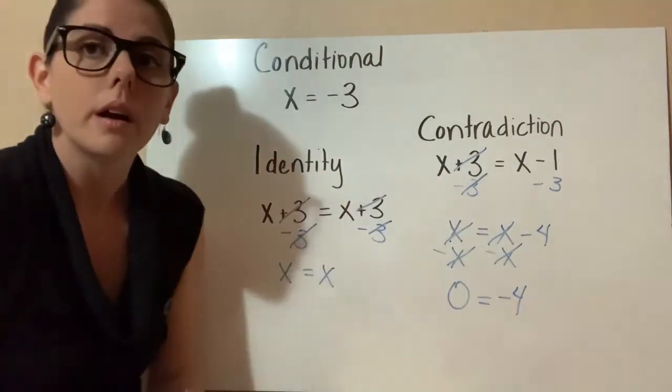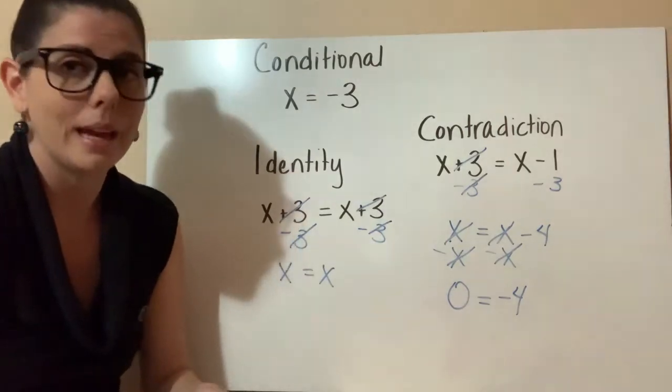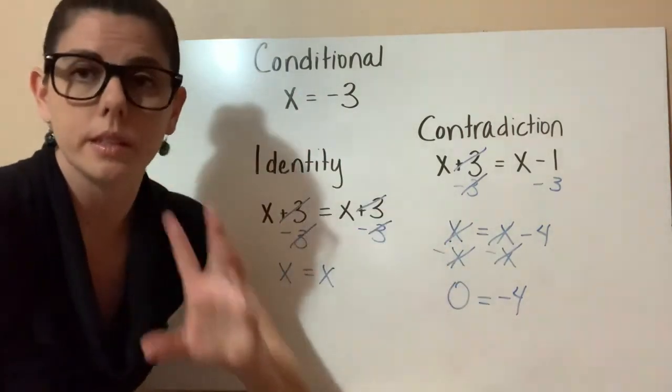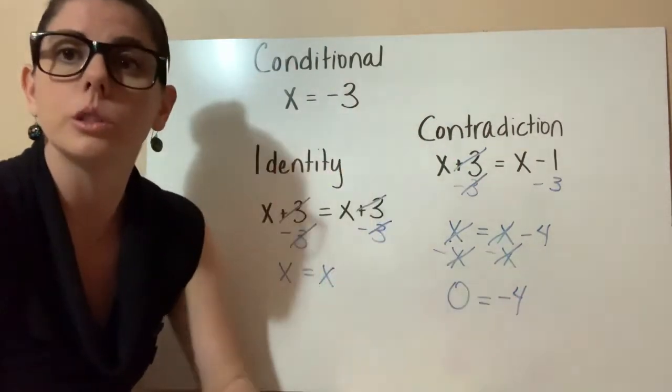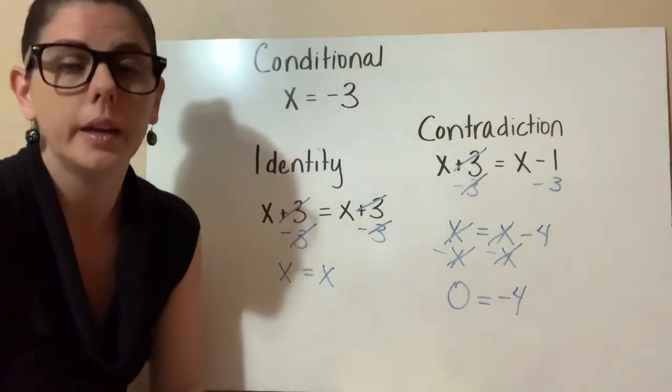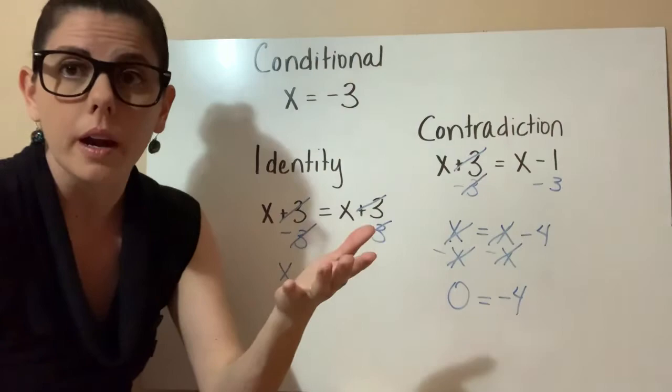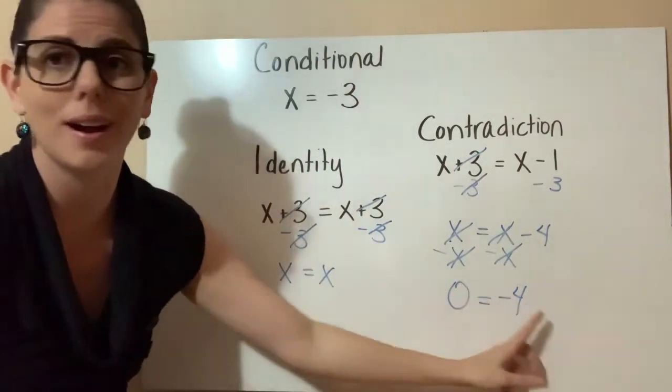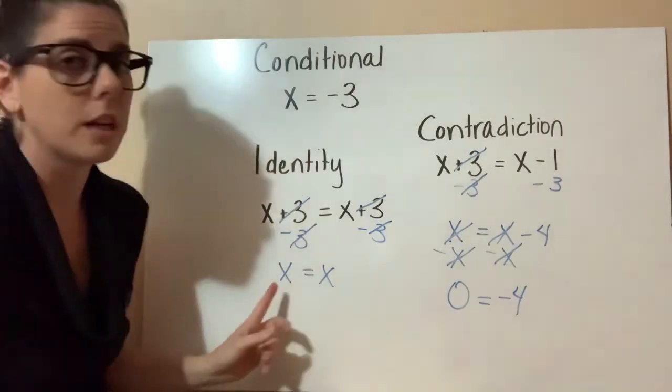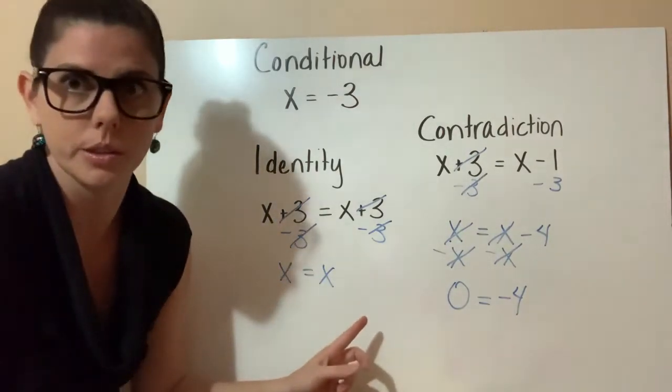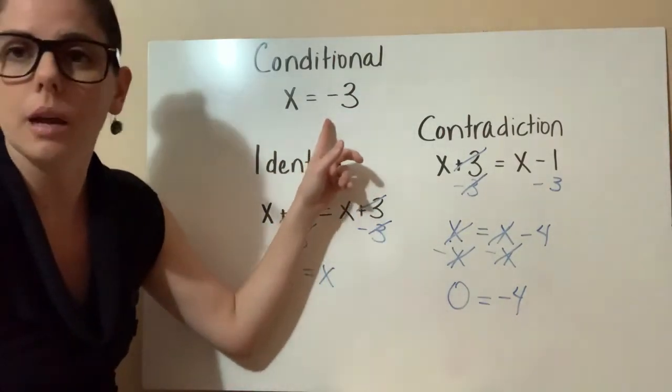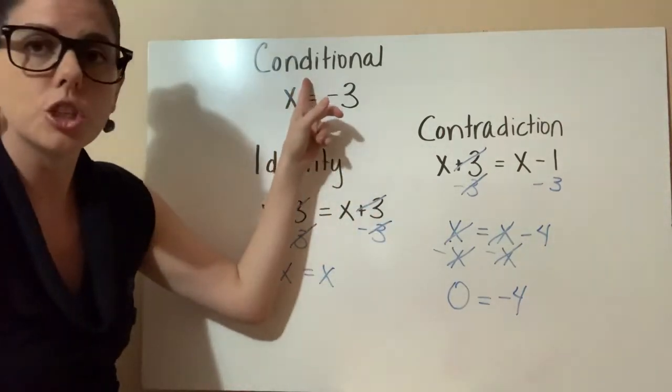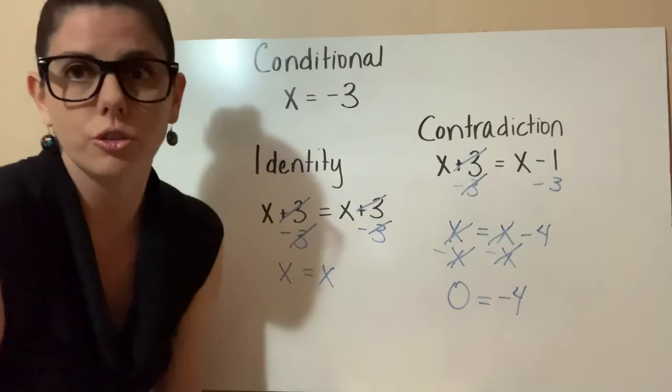So there are a couple different types of equations, and again, these are super simplified versus the ones that you'll see in the book. You'll have to do multiple steps to get to this point. But just be aware that there are different types of answers to equations. Sometimes you're not going to find a real answer. Sometimes you're going to find all the real answers. And then most of the time we're just going to be finding one answer. So again, conditional identity and contradiction equations.